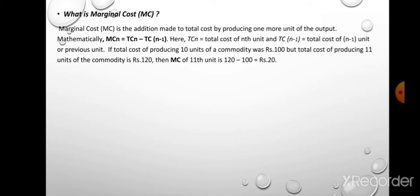Mathematically, MCn = TCn − TCn−1, where TCn is the total cost of the nth unit and TCn−1 is the total cost of n−1 units, or the previous unit. For example, if the total cost of producing 10 units was 100 rupees, but total cost of producing 11 units is 120 rupees, then the marginal cost of the 11th unit = TC11 − TC10 = 120 − 100 = 20 rupees.